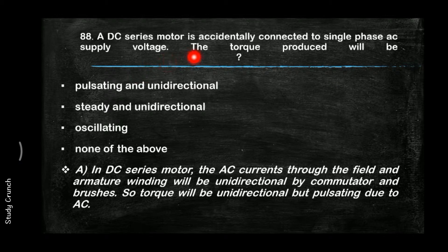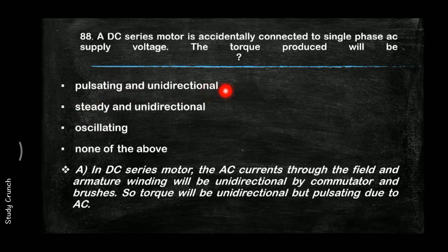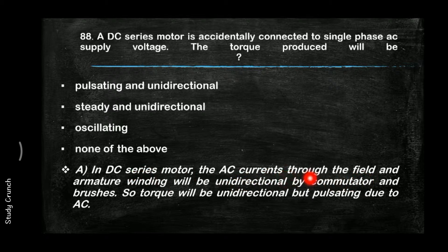A DC series motor is accidentally connected to a single-phase AC supply. What will happen to the torque produced? The answer is it will be pulsating and unidirectional. The AC current through the field and armature winding will be made unidirectional by the commutator and brushes, so the torque is unidirectional but pulsating.